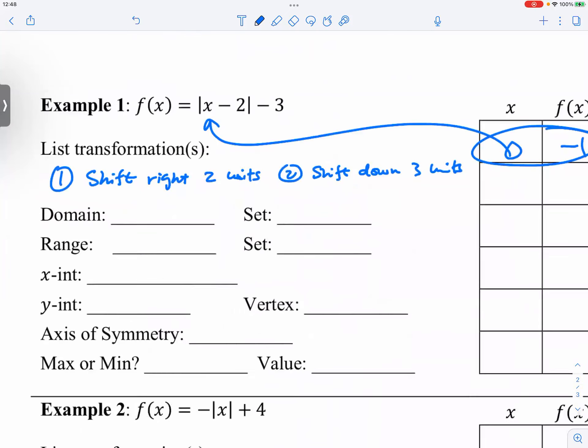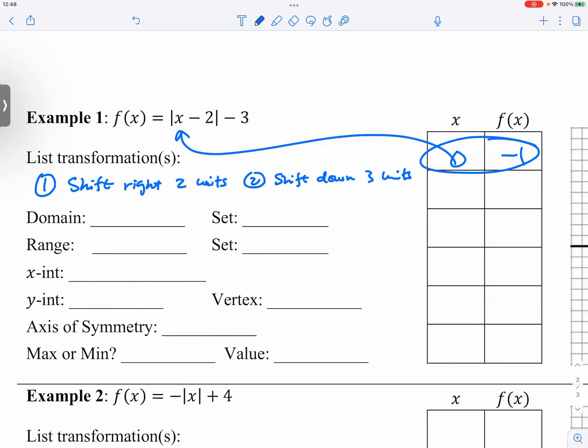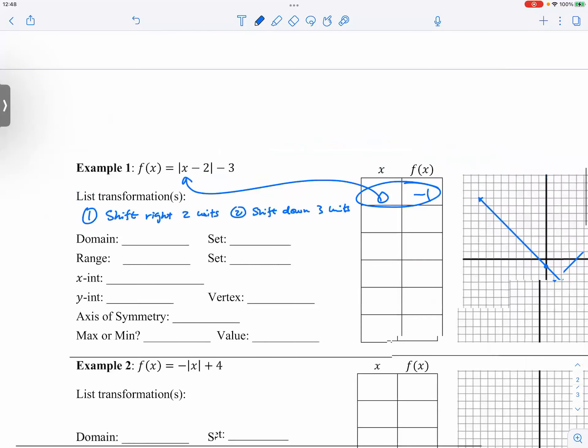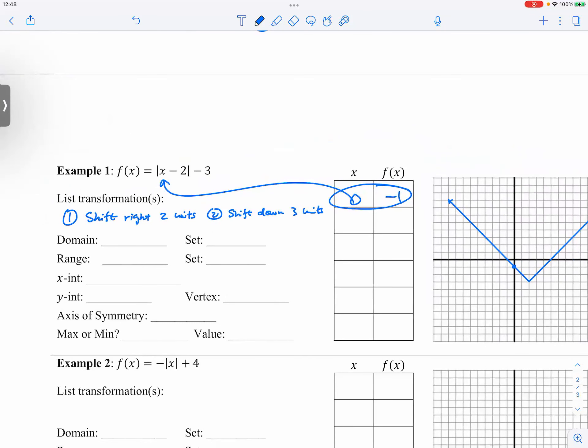All right, so let's go ahead and start filling out these tables. What is the easiest thing to fill out right here? Domain. What's the domain here? We have all real numbers. So domain means the x values, so it goes from negative infinity to infinity. So that is one of the easiest things. And we have interval notation and set notation for these two.